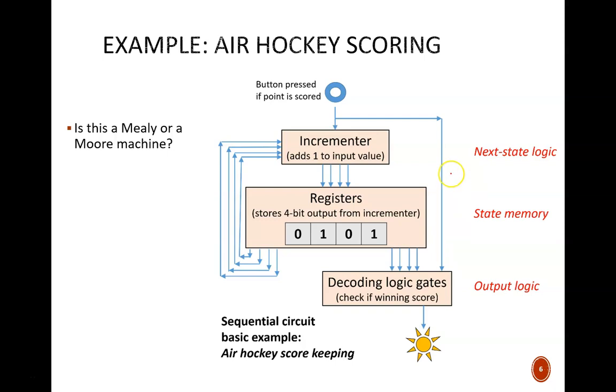We could accomplish the same thing with a Moore machine. In that case, this wire would be removed. Then, the finished signal would occur once six points appear on the register.